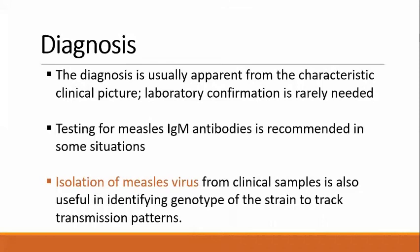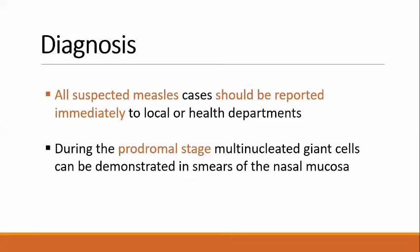Diagnosis: The diagnosis is usually apparent from the characteristic clinical picture, and laboratory confirmation is rarely needed. Testing for measles immunoglobulin M antibodies is recommended in some situations. Isolation of measles virus from clinical samples is also useful in identifying the genotype of the strain to track transmission patterns. All suspected measles cases should be reported immediately to local or state health departments. During the epidermal stage, multinucleated giant cells can be demonstrated in smears of the nasal mucosa.